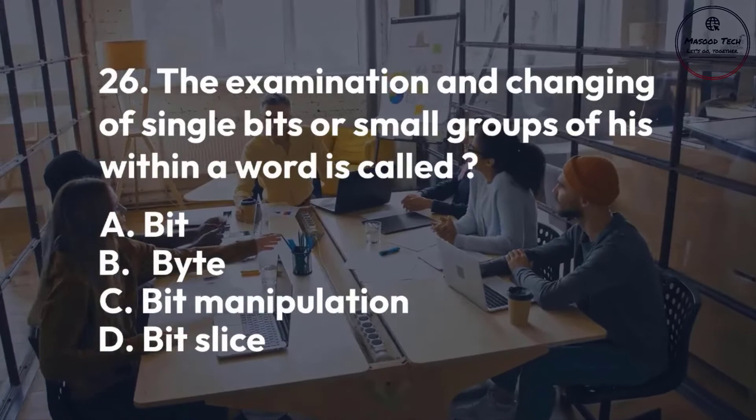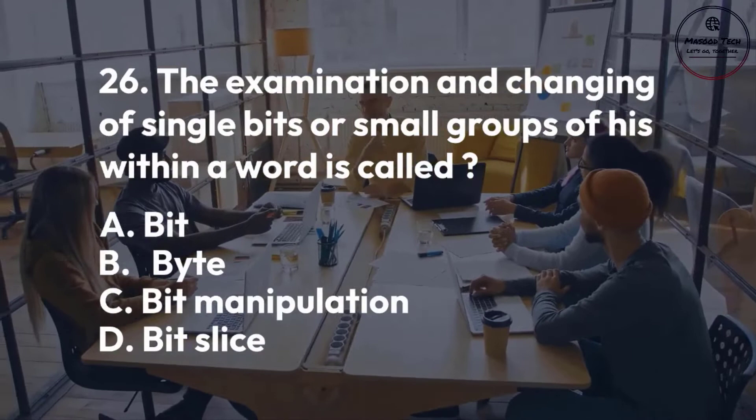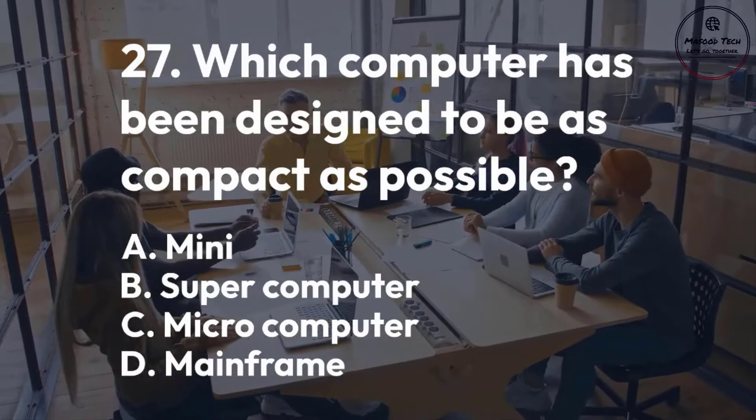Number 27. Which computer has been designed to be as compact as possible? A. Mini. B. Supercomputer. C. Microcomputer. D. Mainframe. Correct answer is C.